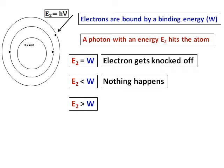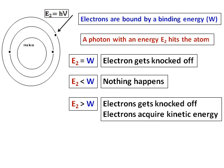this is an important case. In this case, what happens is an electron gets knocked off and it acquires a kinetic energy. Apart from the two energies which we have been talking about, E2, the energy of the photon and W, the energy with which the electron is bound to the nucleus, there is a third energy, the kinetic energy.